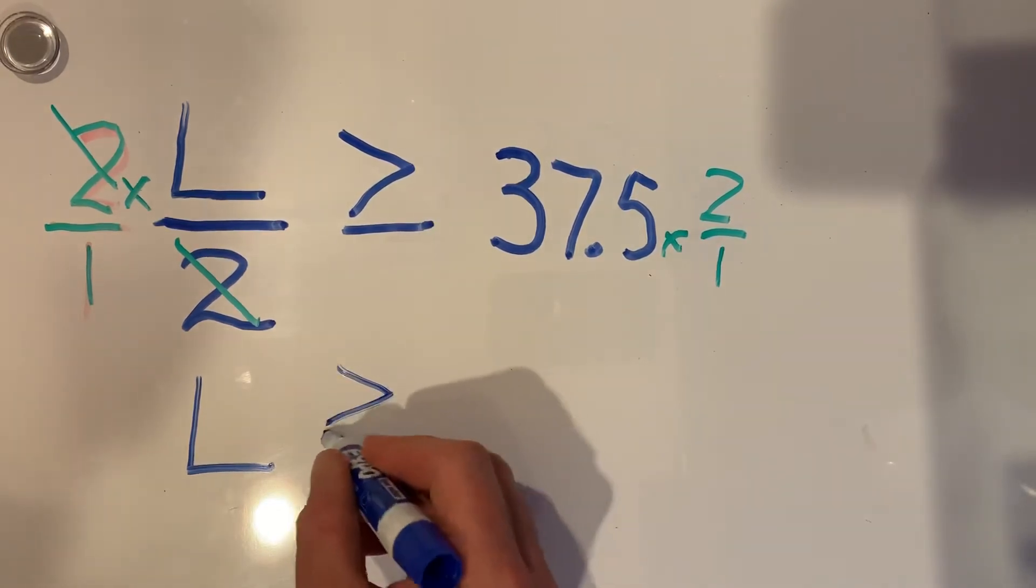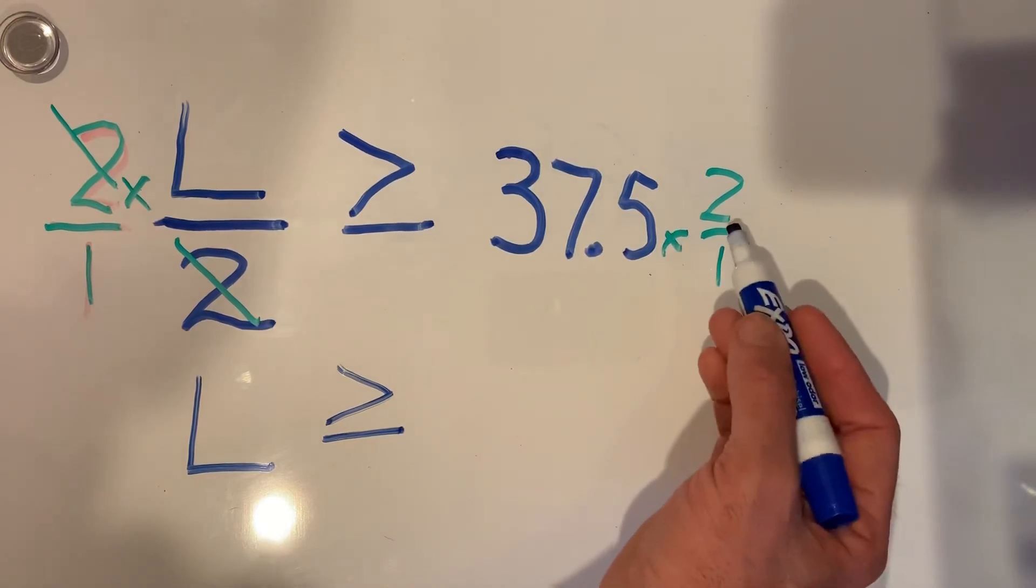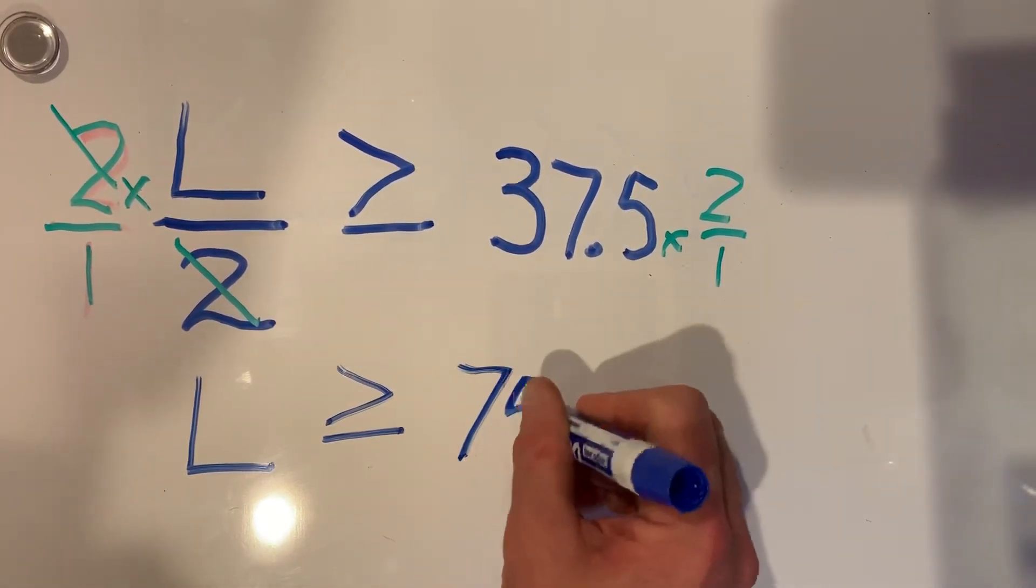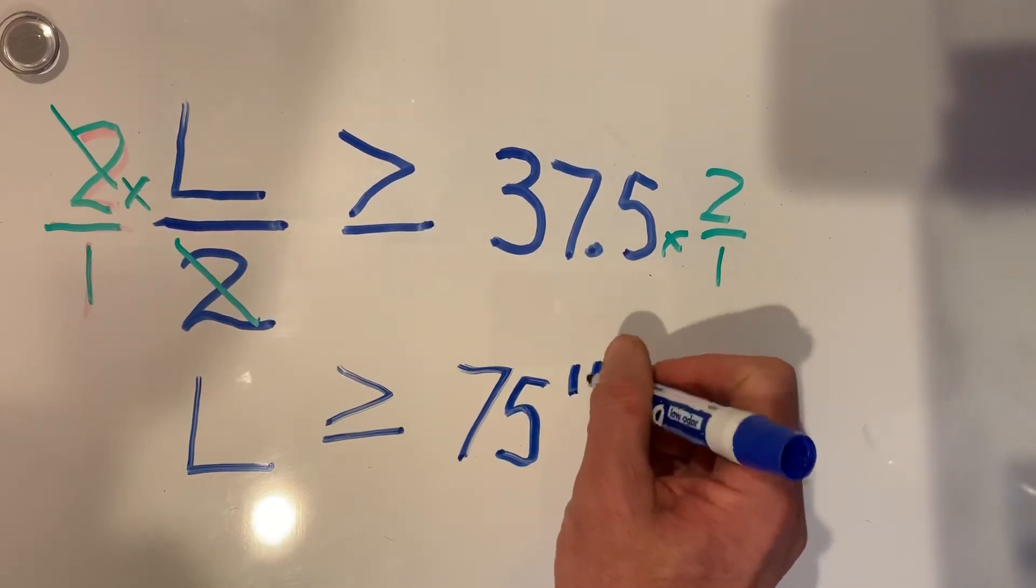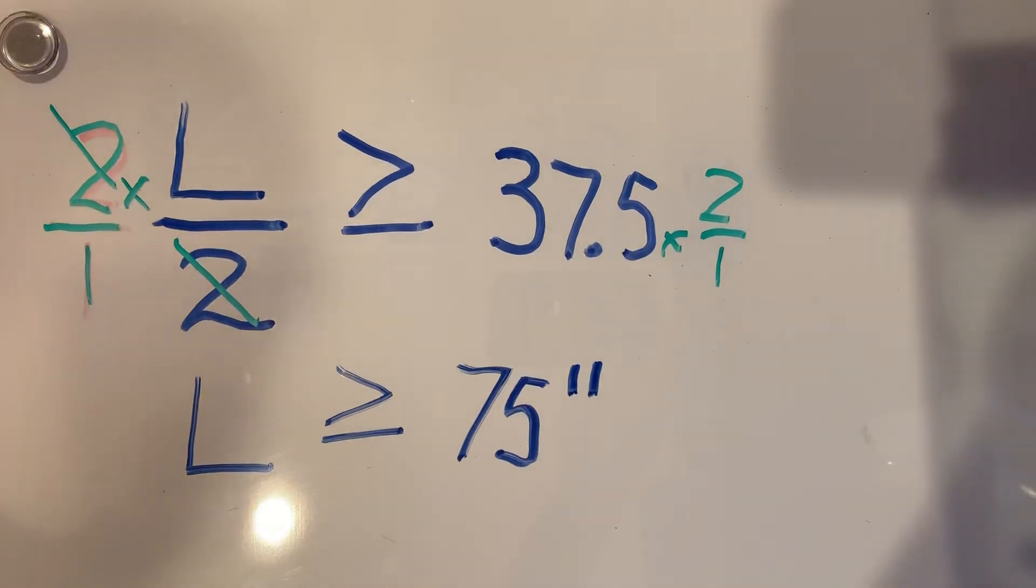And that has to be greater than or equal to. If you multiply 37.5 times 2, you'll end up with 75 inches. So, the length of the board has to be at least 75 inches in order to get me to 37.5 inch lengths.